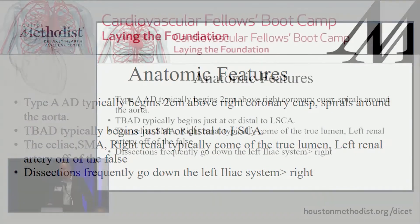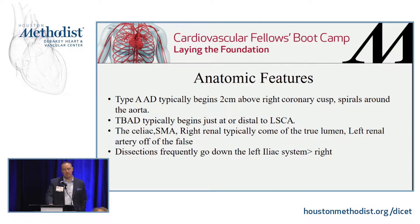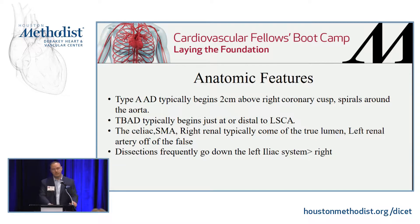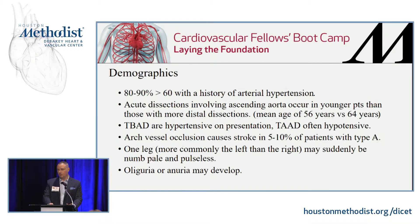Anatomic features: a type A dissection typically begins two centimeters above the right coronary cusp, curves around the arch and goes down. Type Bs typically begin just at or distal to the left subclavian artery. In general for a type B dissection, the celiac, SMA, and right renal come off of the true lumen, while the left renal comes off of the false — though not always. Dissections frequently track down the left side as opposed to the right.